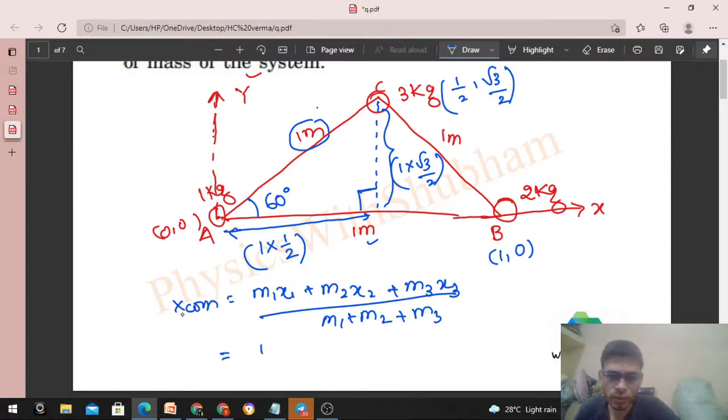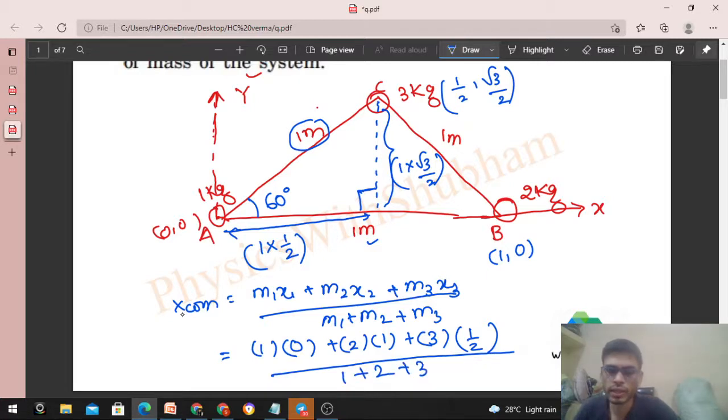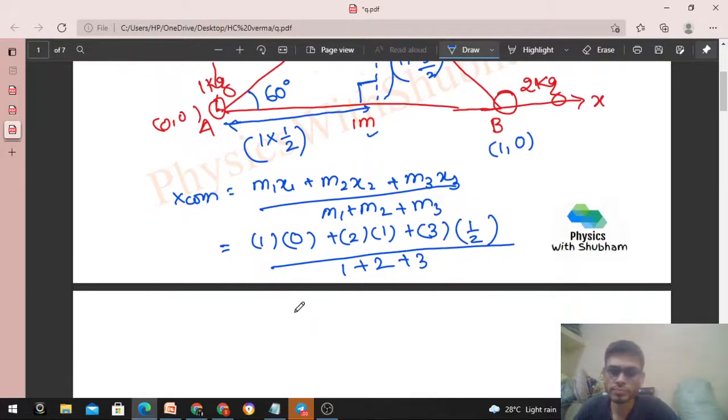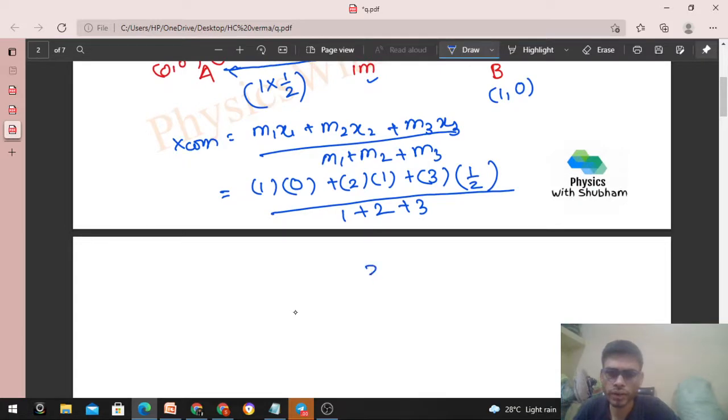So m₁ is 1 kg, x-coordinate is 0, plus m₂ is 2 kg, x-coordinate is 1, plus m₃ is 3 kg, x-coordinate is 1/2, divided by m₁ + m₂ + m₃ which is 1 + 2 + 3. Solving this gives 3.5 / 6, that is nothing but 7/12.